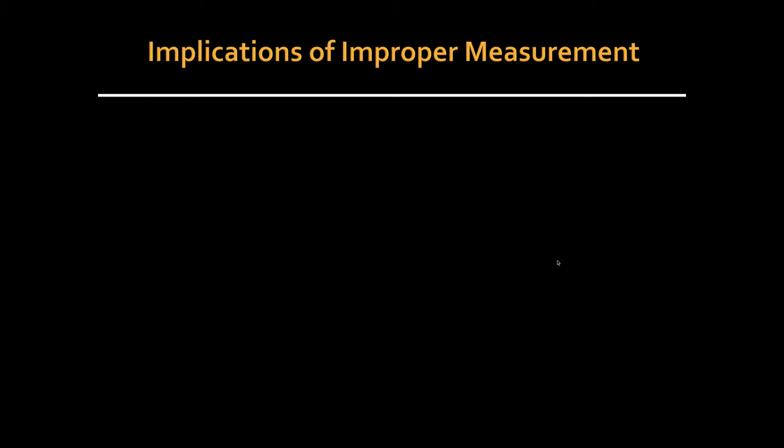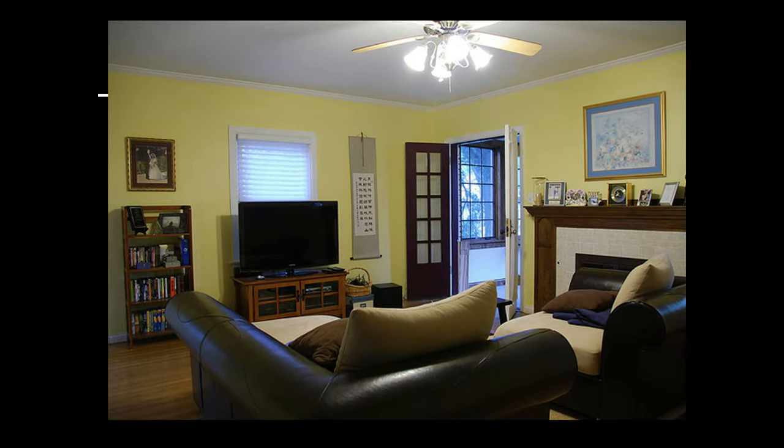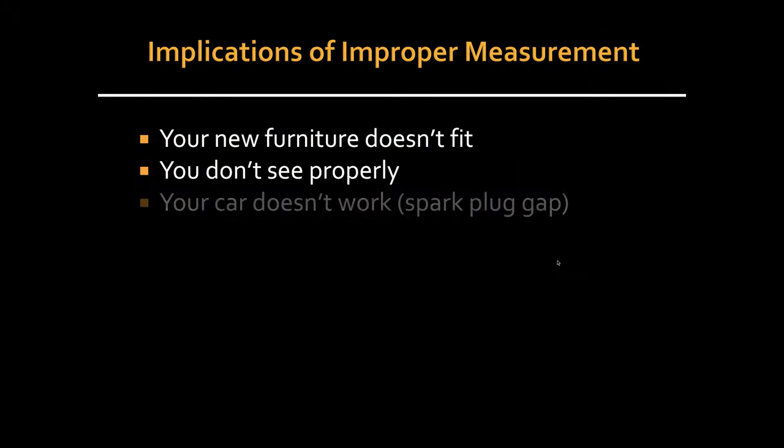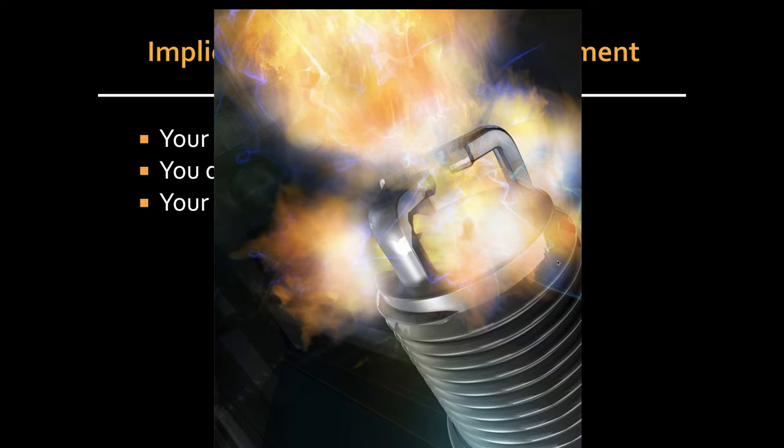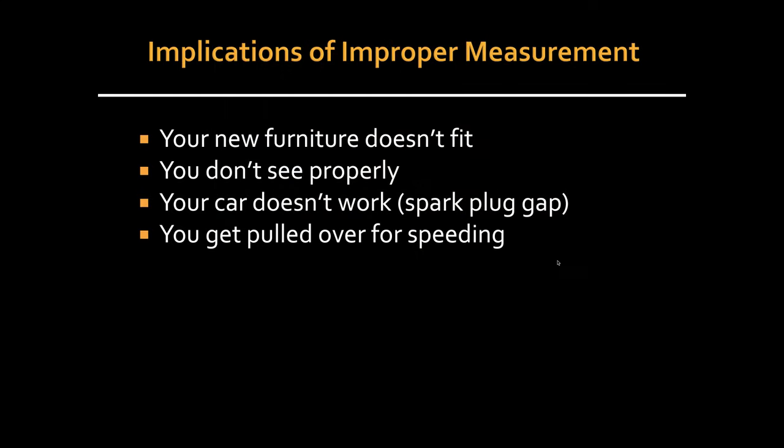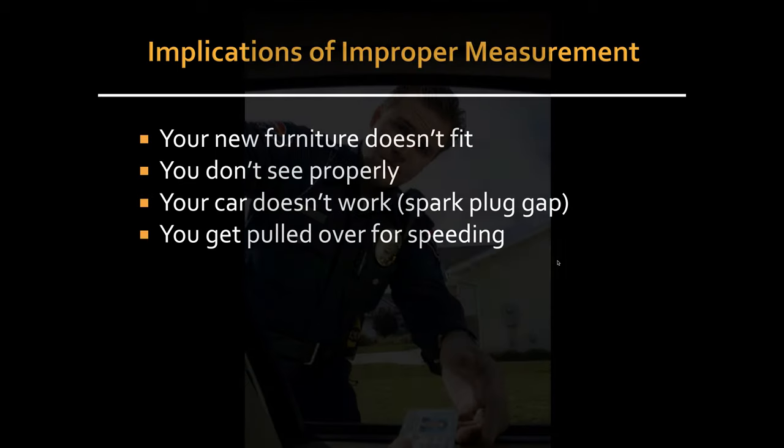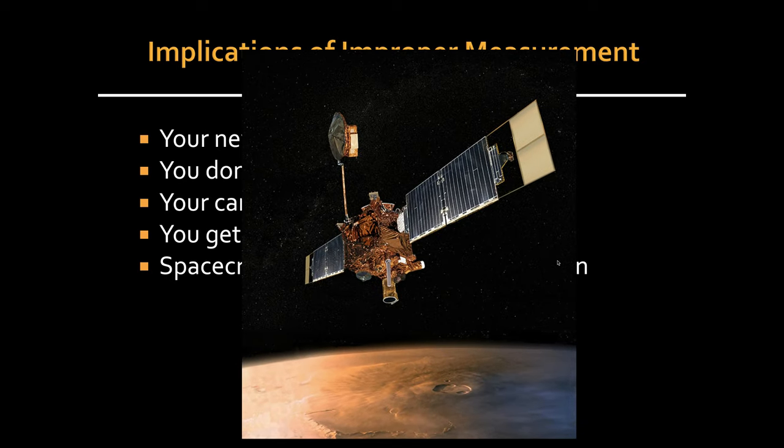Now, implications of improper measurement. Well, maybe you don't get your new furniture through the door or into your living room. Maybe you don't see properly because you didn't have your eyes measured properly. Maybe your car doesn't work properly because that spark plug gap isn't right. Maybe you get pulled over for speeding because you weren't obeying the posted speed limit by looking at your speedometer.